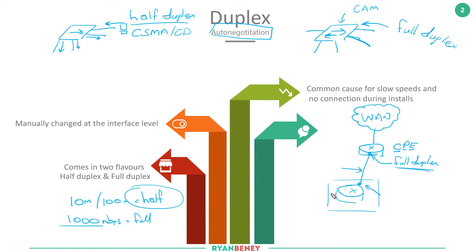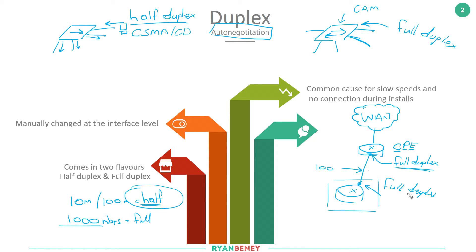So if yours is set to auto and the supplier is set to full duplex, you become half duplex. When you look at the interface statistics you'll see a lot of collisions — most likely late collisions — and traffic will be sparse. On a 100 meg link you're most likely going to see 45 meg at most, and you'll see problems with latency. Ultimately it manifests as a duplex mismatch. The way to resolve this would be to set yours to full duplex, clear the counters on the interface to ensure collisions have stopped, and run a throughput test.